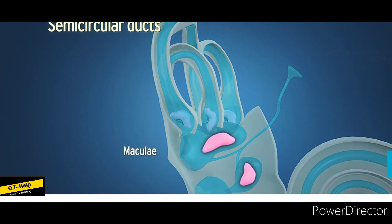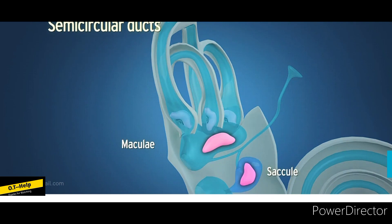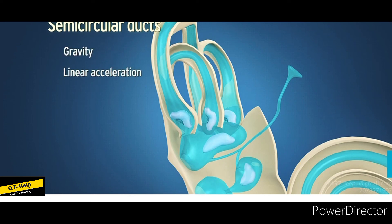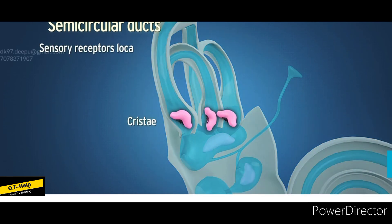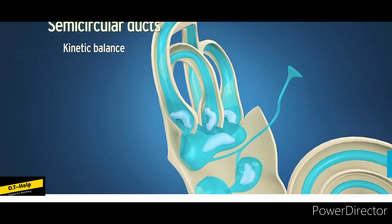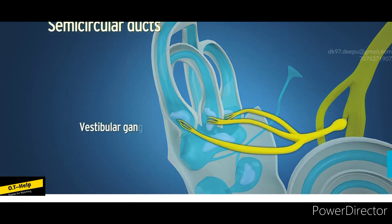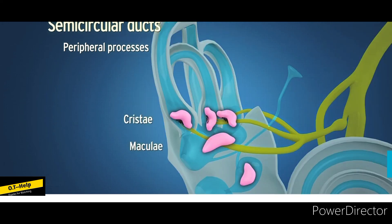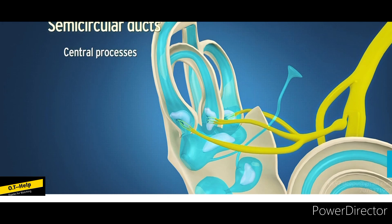The vestibular system contains maculae and cristae. Maculae are sensory receptors located in the walls of the saccule and utricle; they are responsible for static balance, helping in sensing the position of the head in response to gravity and linear acceleration. Cristae are sensory receptors located in the ampullated ends of the three semicircular ducts; they respond to kinetic balance, helping in sensing position during angular acceleration. The vestibular ganglion is situated in the lateral part of the internal acoustic meatus; peripheral processes of its neurons supply the cristae and maculae, while the central processes form the vestibular nerve.